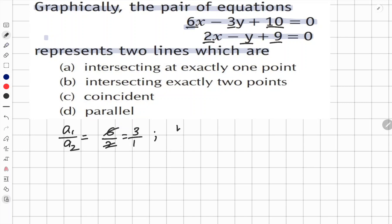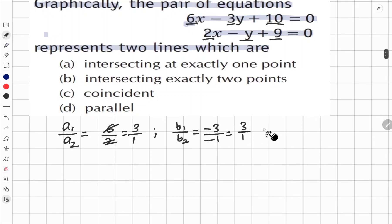Now we need to find b₁ upon b₂, which is equal to minus 3 divided by minus 1. Minus 3 divided by minus 1, the negatives cancel out, so the ratio will be the same, 3 is to 1.